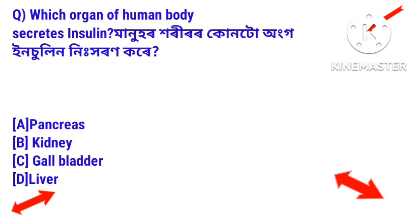Question 3: Which organ of the human body secretes insulin? Answer: Pancreas. The pancreas is the organ that secretes insulin.